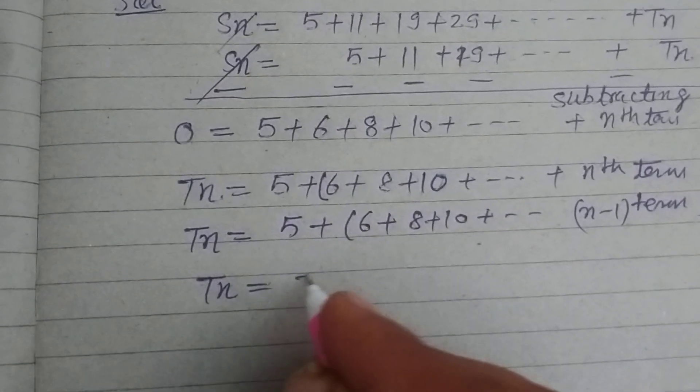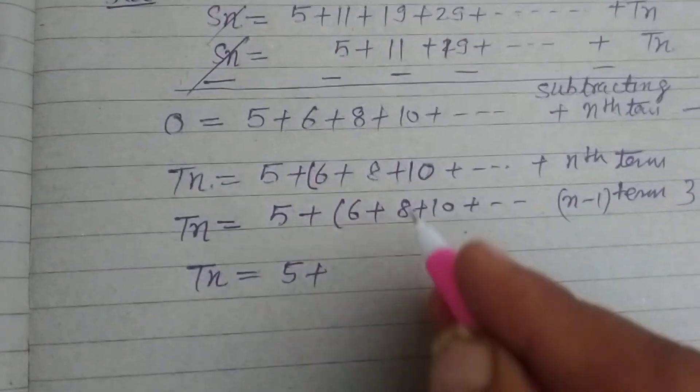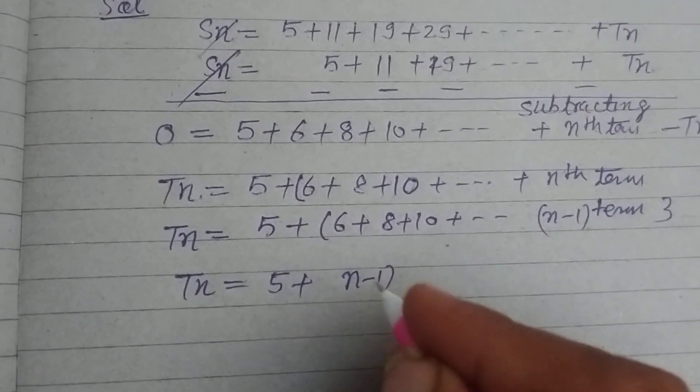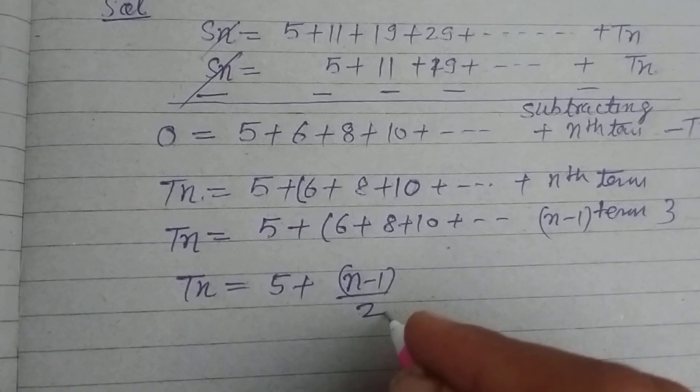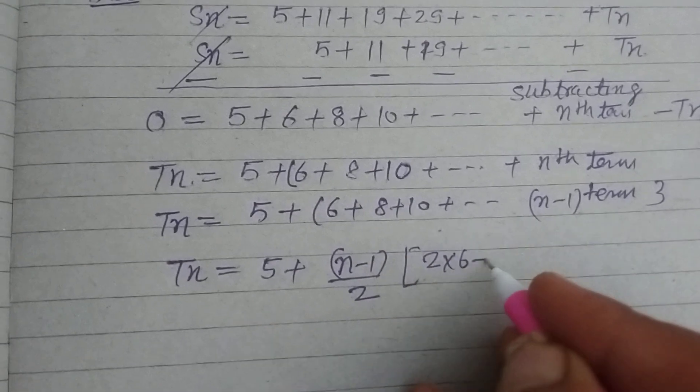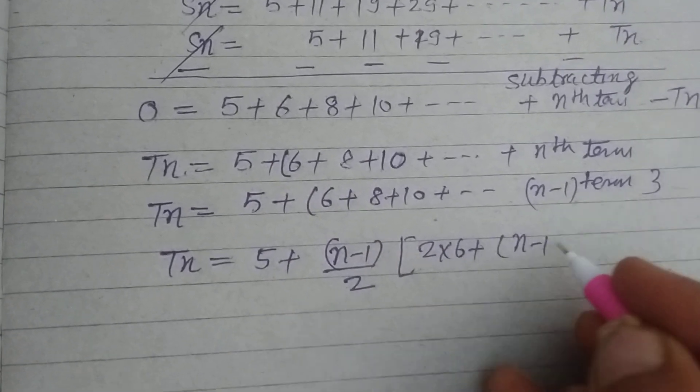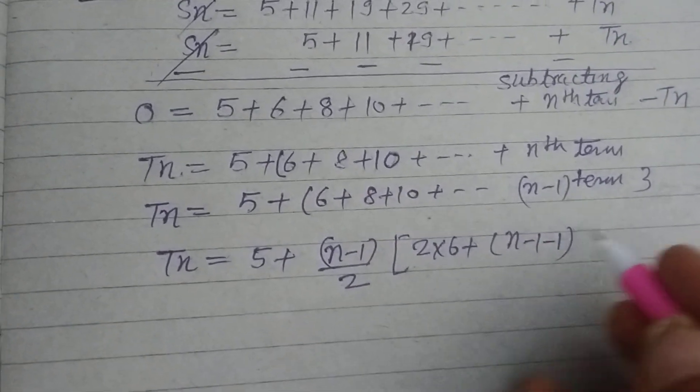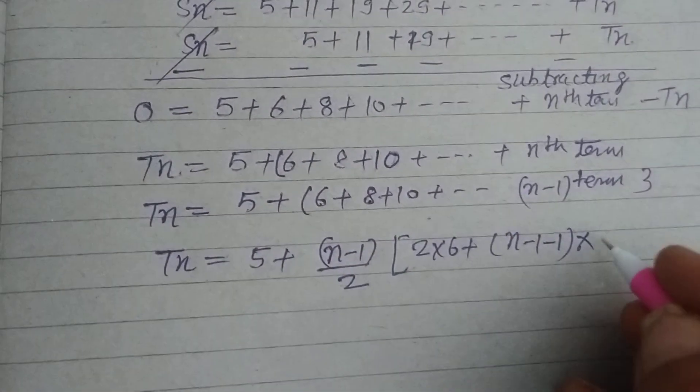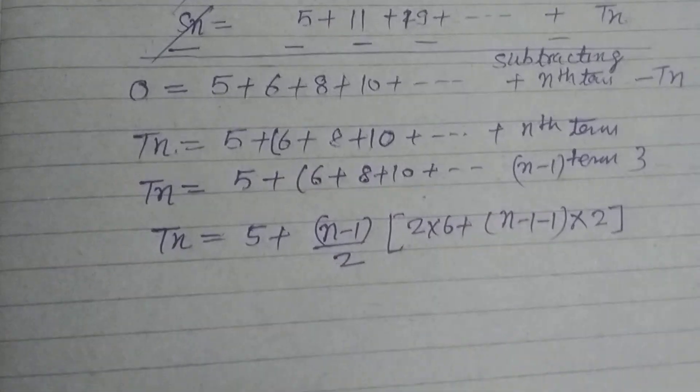So TN equals 5 plus the sum of N minus 1 terms. So N minus 1 by 2 times 2A, where A is 6, plus N minus 1, N minus 1 minus 1, into D. D is 8 minus 6 equals 2, 10 minus 8 equals 2. So the common difference is 2.